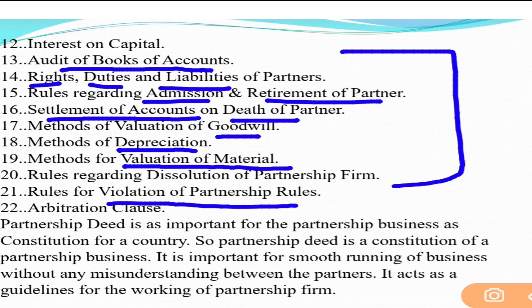The point is that once you understand all these things, the contents become clear on their own. You don't need to memorize them — just think: if two persons, whether friends, brothers, or sisters, are starting a business together, what terms and conditions would you decide in advance so that in the future no conflicts, no disputes, no disagreements arise? Think about it and many points will come out naturally.